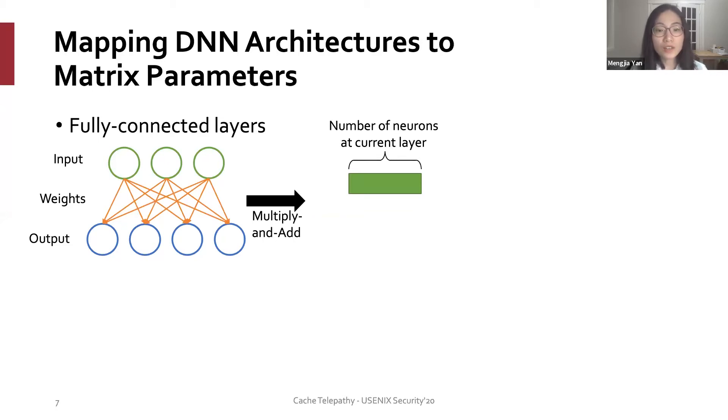Generally, the computation of a fully connected DNN is performed over a batch of a few inputs at a time. So we can get multiple such vectors and stack them together into a matrix. This is our input matrix.